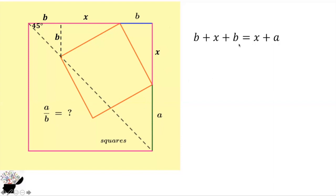Now B plus B is 2B plus X equals X plus A. We subtract X from both sides. We are going to get 2B is equal to A.